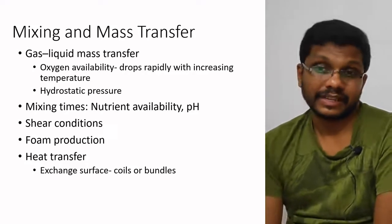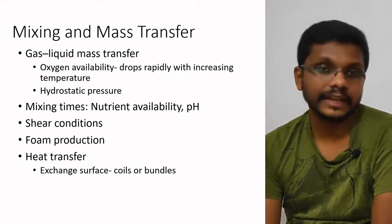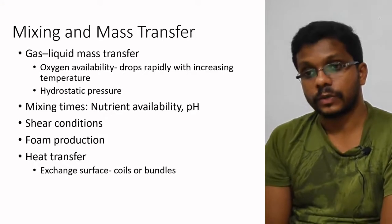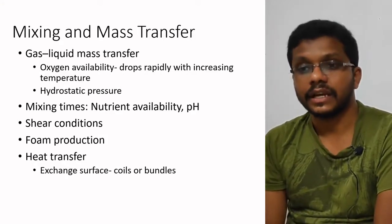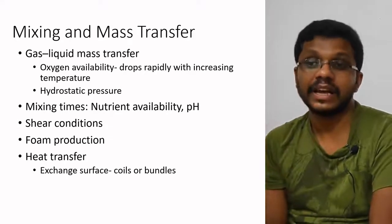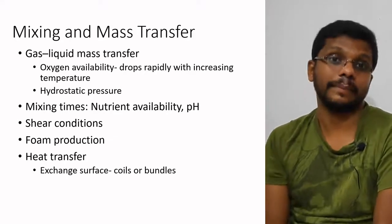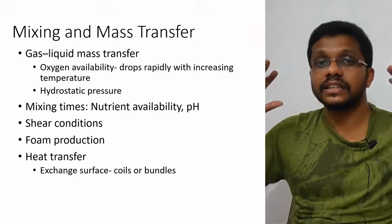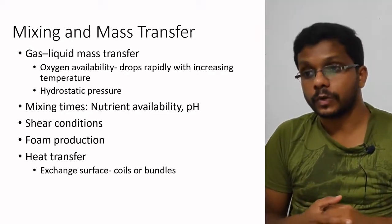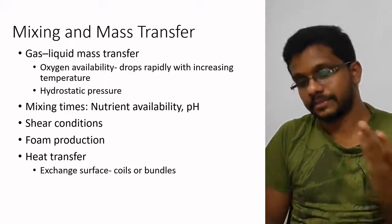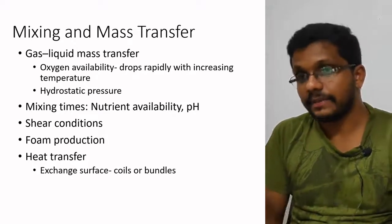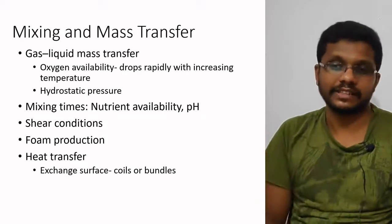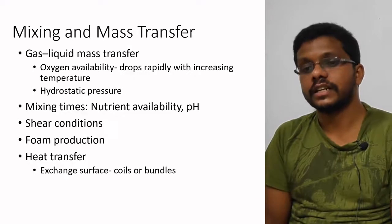Mixing and mass transfer are the most critical factors in large-scale fermentation. Gas-liquid oxygen availability changes with hydrostatic pressure and temperature. Temperature accumulation is negligible in small fermenters due to high surface area, but is a significant issue in large fermenters — as temperature increases, oxygen solubility decreases. Thorough mixing is required to avoid nutrient gradients, pH gradients, shear conditions, foam production, and heat transfer problems.